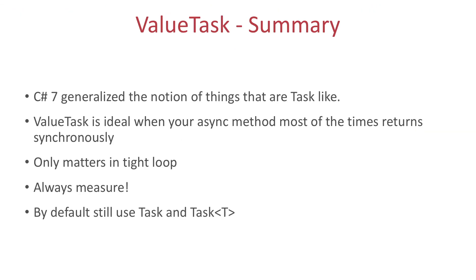Let's summarize what we learned in this video. In C# 7, the possible return types of async methods were generalized — everything that has a GetAwaiter method can be returned from an async method. A new type called ValueTask was introduced, which is a value type. It can boost the performance of async methods in tight loops, especially when the async method returns synchronously. With this new type, you can have a single API for both the synchronous and asynchronous case, avoiding heap allocation in the synchronous case.